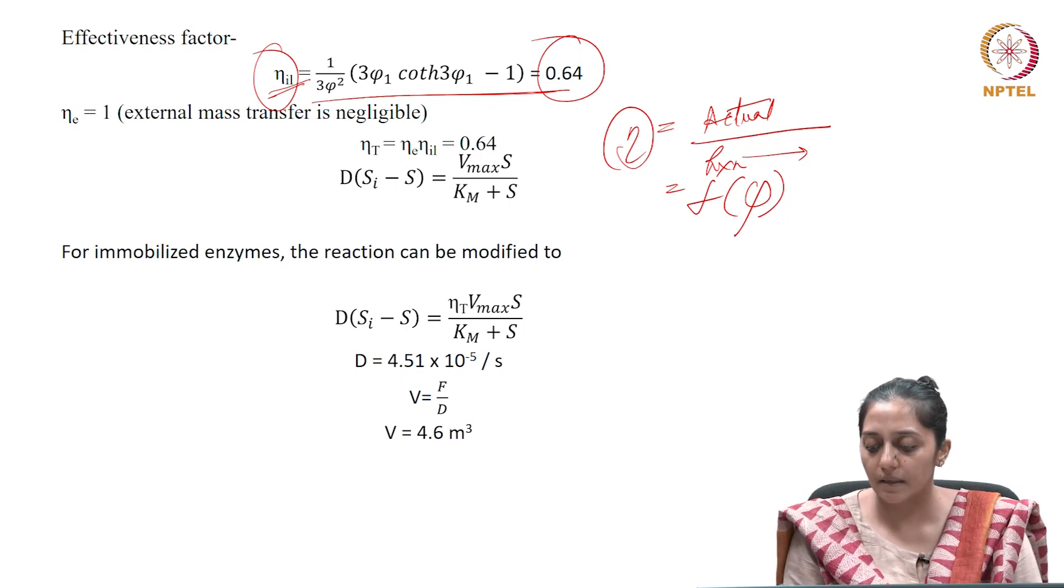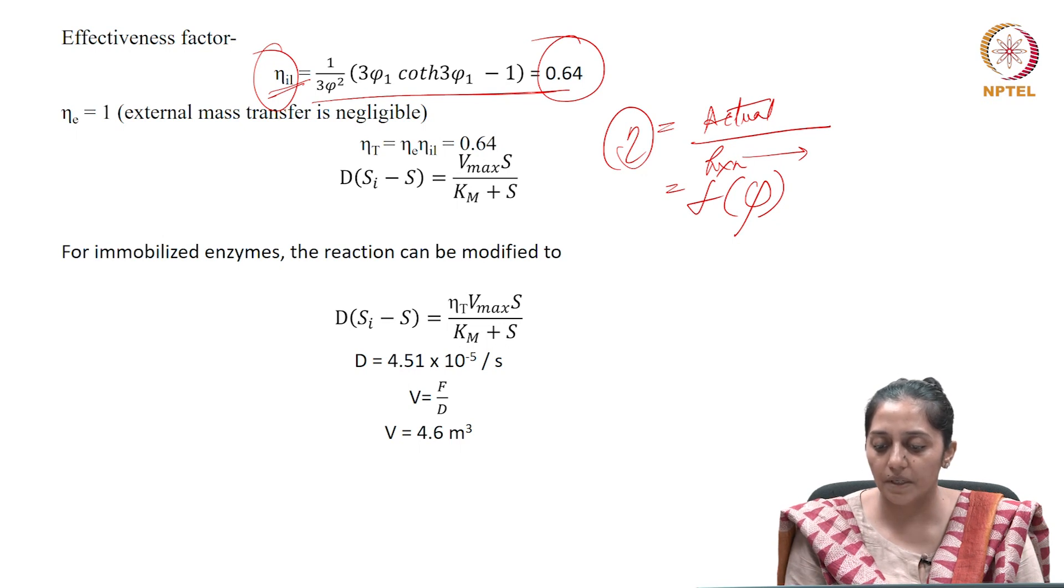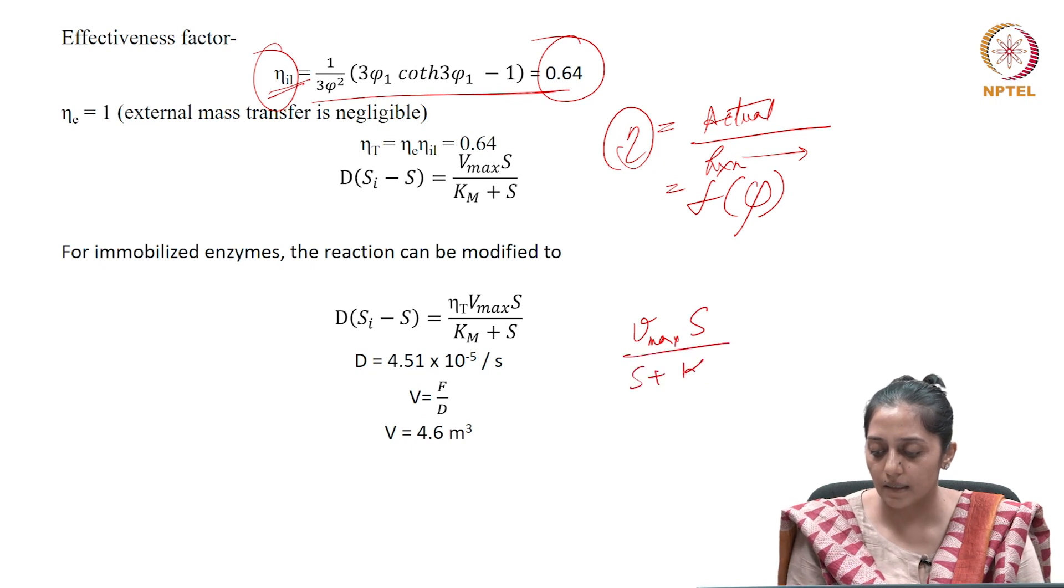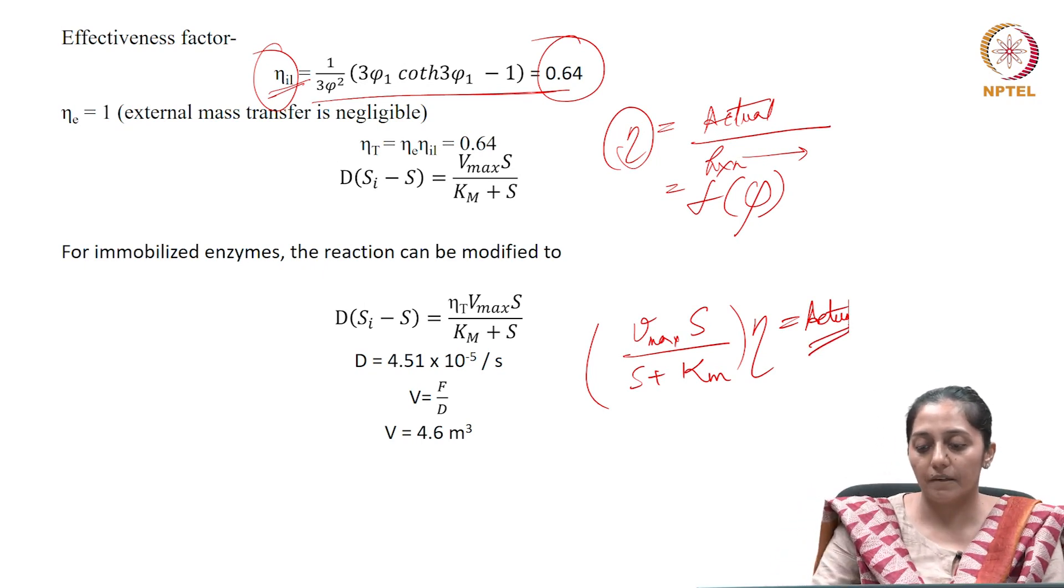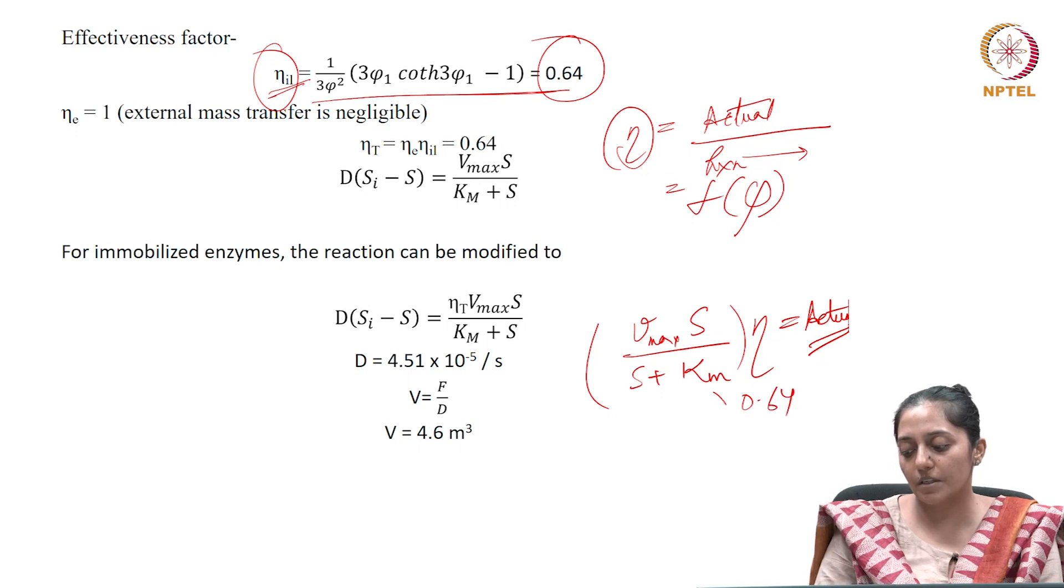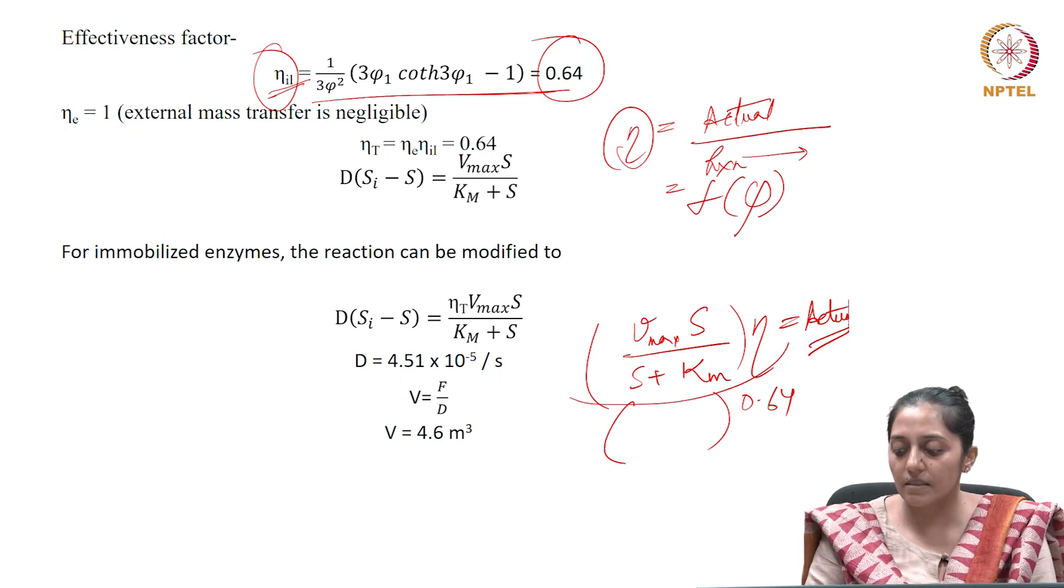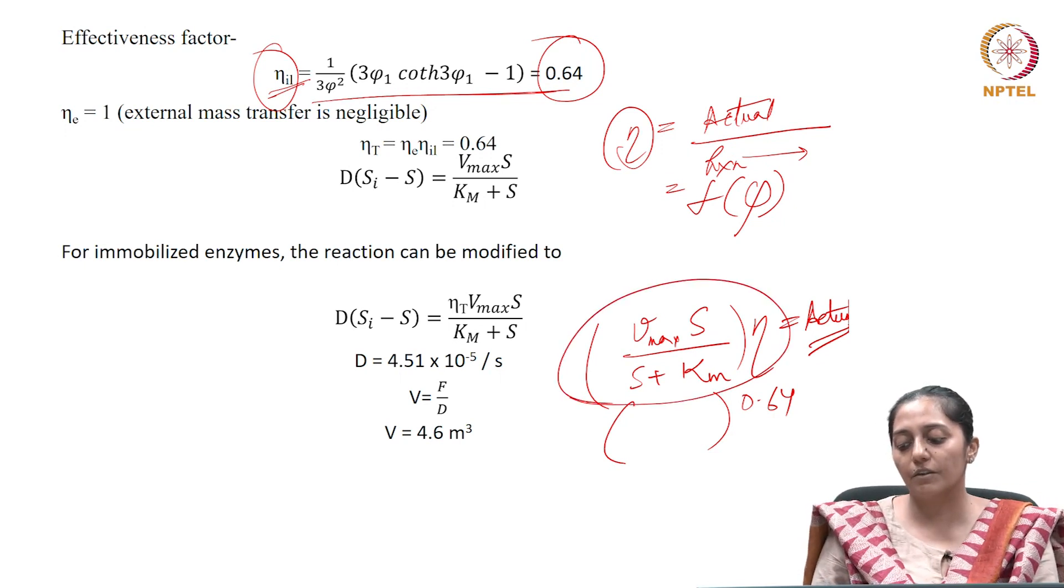The actual reaction rate in the presence of diffusion becomes (Vmax·S)/(S + Km) multiplied by the effectiveness factor of 0.64. This is the actual rate at which substrate is consumed in the reaction.